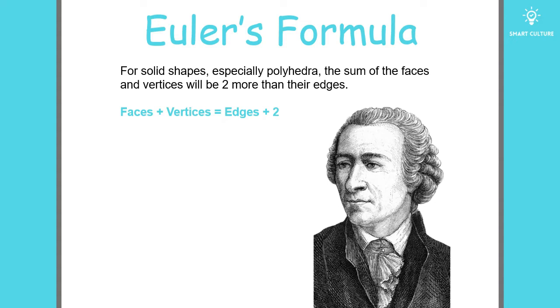Euler came up with this formula. The faces plus the vertices is equal to the edges plus two. You can also write it like this: F plus V is equal to E plus two.